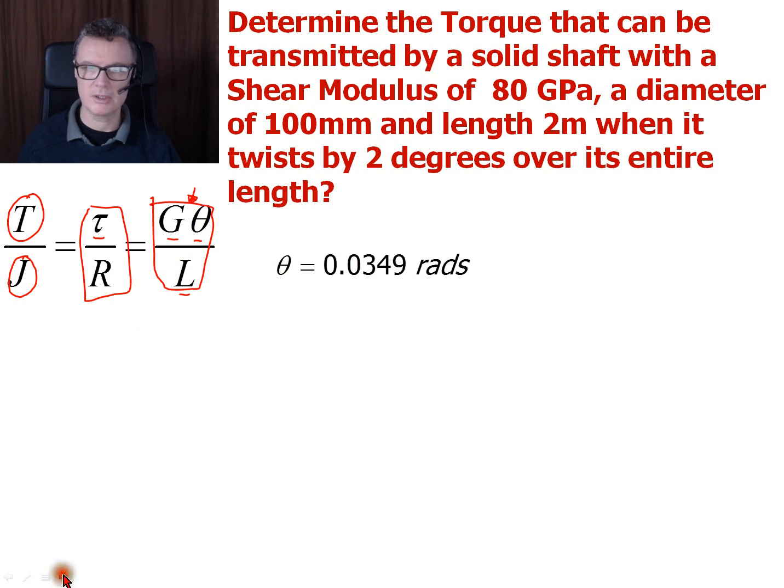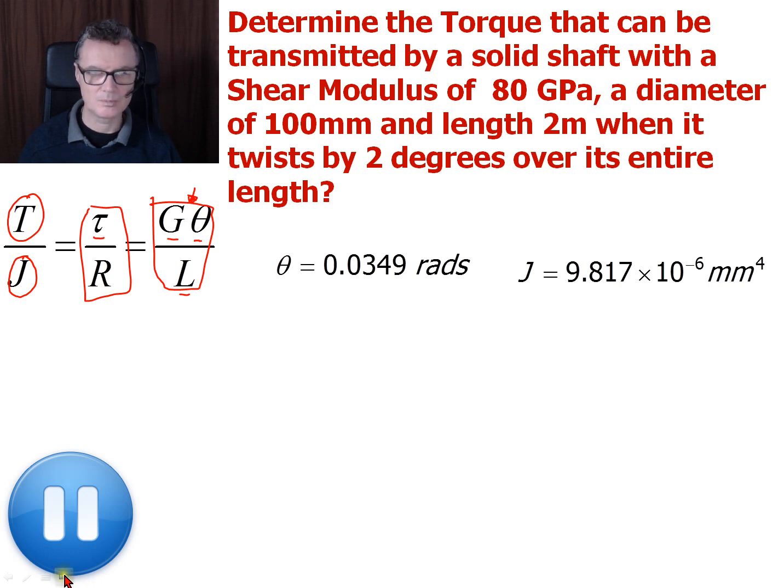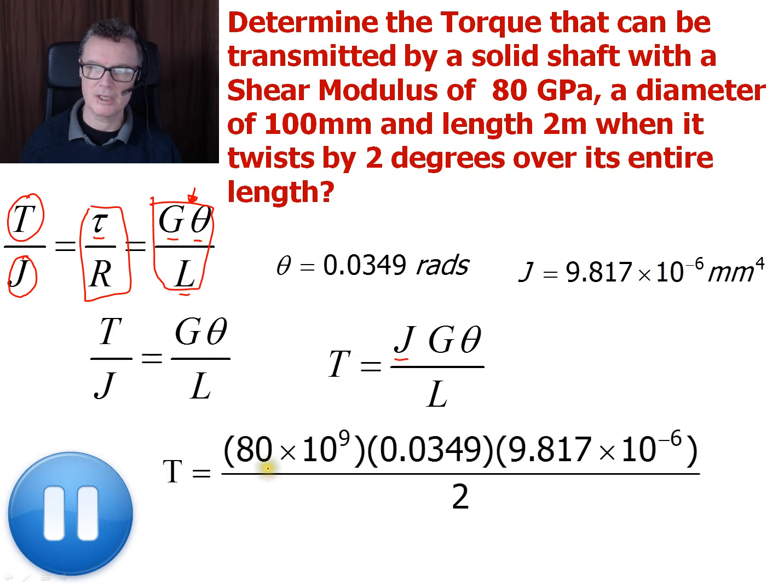So, use the angle of twist data we've got. Use the polar second moment of area, which we calculated previously. Pause the video, and you should be able to work out how much torque can be transmitted. So, I'm going to use the first and the third column. I'm going to rearrange it so that the J now comes up onto the right-hand side. Put in my data. So, that's my J actually there. I've put it in a slightly wrong order. But, that's my J. And then my G is going to be the 80. And then the angle of twist, divide it by the length, 2. And I get 13.7 kilonewton metres.